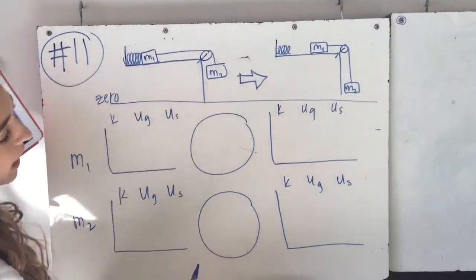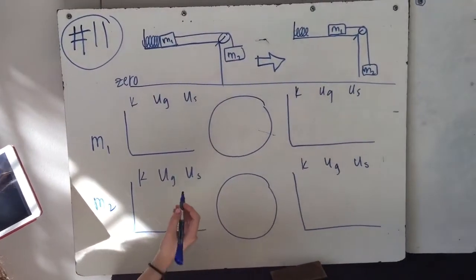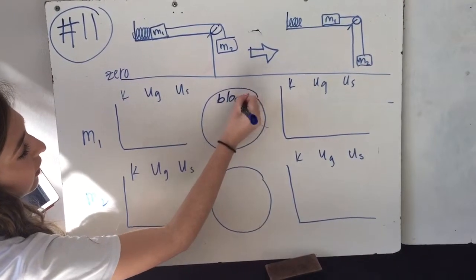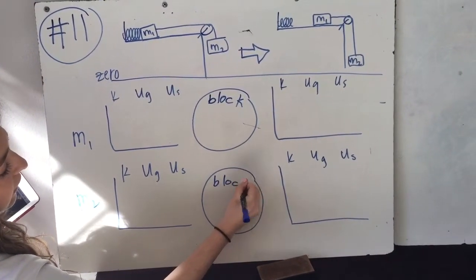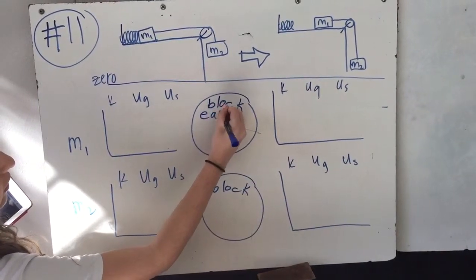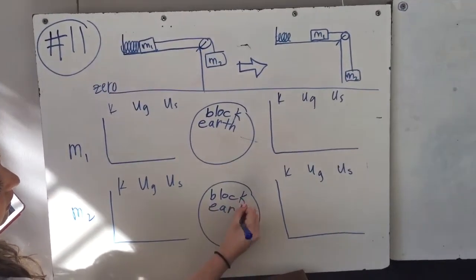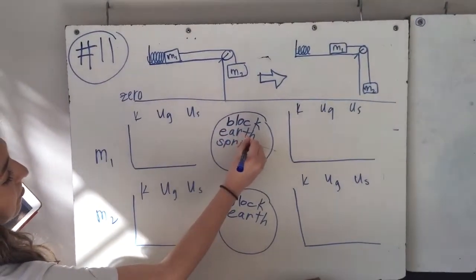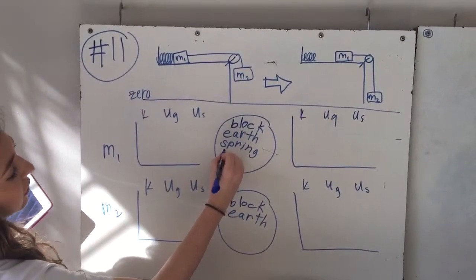So we first set up an LLL diagram for both masses, the M1 and the M2. And so the materials we can use are the block in both of them, the earth, and the spring, but the spring is only in M1, and then the surface.